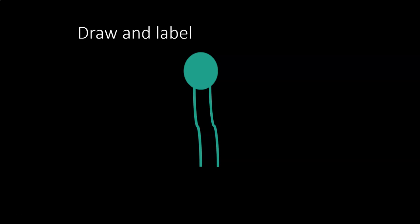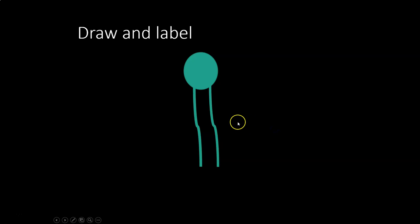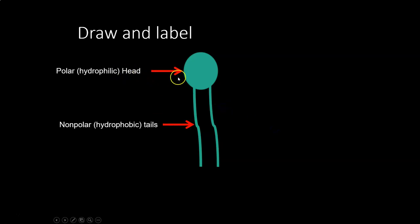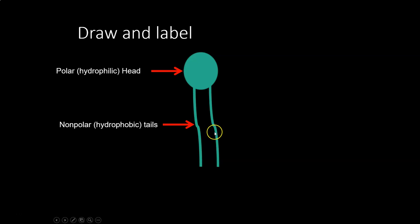We talked about phospholipids the first time when we were covering organic molecules. This is a modified triglyceride where one of the fatty acid tails — triglycerides have three of them — gets replaced by a phosphate, which has a charge to it. So this ends up being a molecule that likes water on the head where the phosphate is, because phosphate is a charged molecule, while the fatty acid tails are nonpolar covalent and therefore hydrophobic.